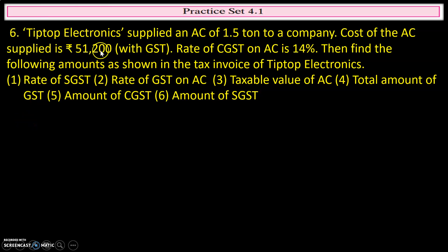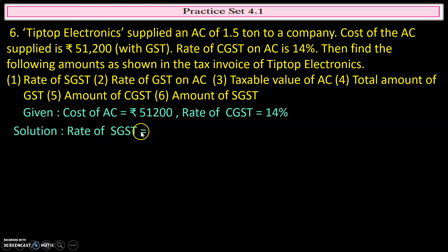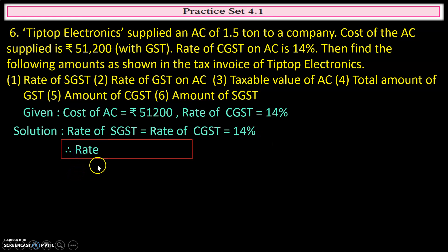We know that the cost of the AC is given — this is the actual cost of the AC with GST, meaning it includes the tax. The rate of CGST is given. Now we will find the first quantity: rate of SGST is equal to rate of CGST, which equals 14 percent. Therefore, rate of SGST is equal to 14 percent.